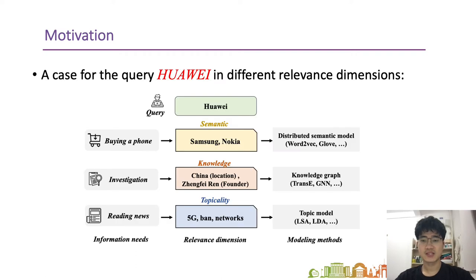Let's take an example to show the necessity of using different relevance dimensions. For the query 'Huawei', we can find that when users have different information needs, the relevance terms are different. Knowledge relevance is easy to understand — the relation of relevance terms is usually determined by an external knowledge graph.